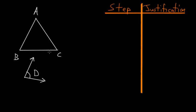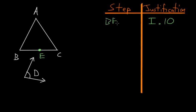Our goal is to construct a parallelogram that's equal in area to this triangle and contains angle D. To start, we use Book 1, Proposition 10, which allows us to bisect a line. We cut line BC in half and label the midpoint E, so BE is equal to EC.